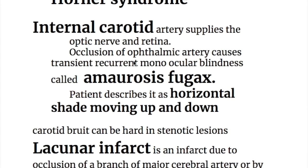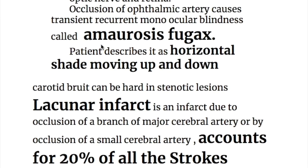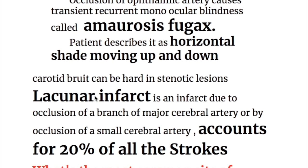The internal carotid artery supplies the optic nerve and retina. Occlusion of the ophthalmic artery causes transient recurrent monocular blindness called amaurosis fugax. The patient describes it as a horizontal shade moving up and down. In carotid stenosis, there is a carotid bruit.